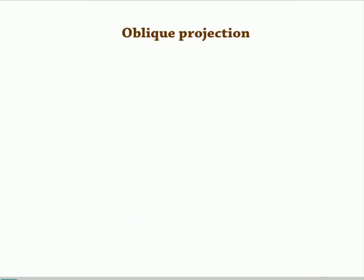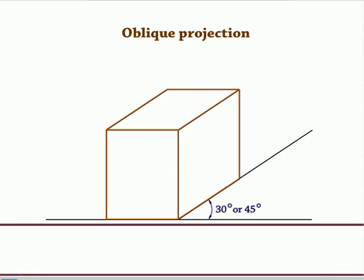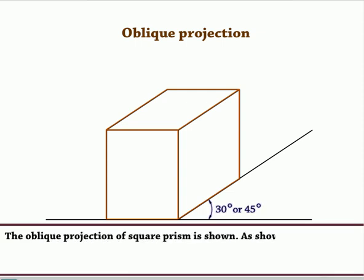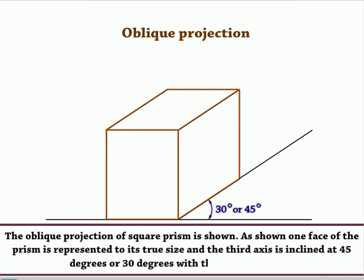Oblique projection. The oblique projection of a square prism is shown. One face of the prism is represented to its true size, and the third axis is inclined at 45 degrees or 30 degrees with the horizontal line.